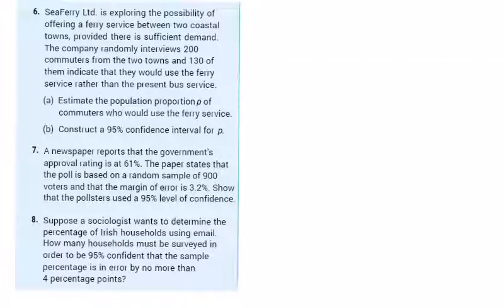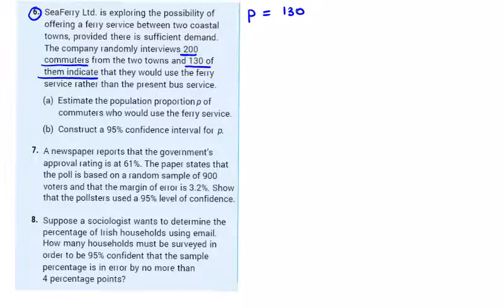Problem about population proportion: SeaFerry Ltd is exploring the possibility of offering a ferry service between two coastal towns provided there is sufficient demand. They interviewed 200 commuters from two towns and 130 of them indicated they would use the service. So we have p, my population proportion, here is 130 out of 200 which is 13 over 20 which is 0.65, and 1 minus p equals 0.35. Handy to set these up the minute you see them in the question. Estimate the proportion of commuters who would use the ferry service.